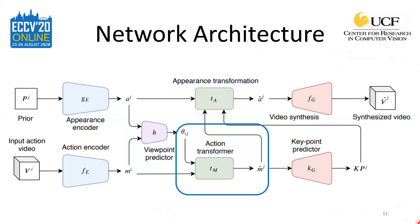The action transformer network serves to transform the action features according to the predicted angular viewpoint change. The network consists of 3D convolutional blocks and outputs the transformed action features at the same resolution as the original action encoding. These transformed action features are later used to transform the appearance features to match the action occurring in the video.